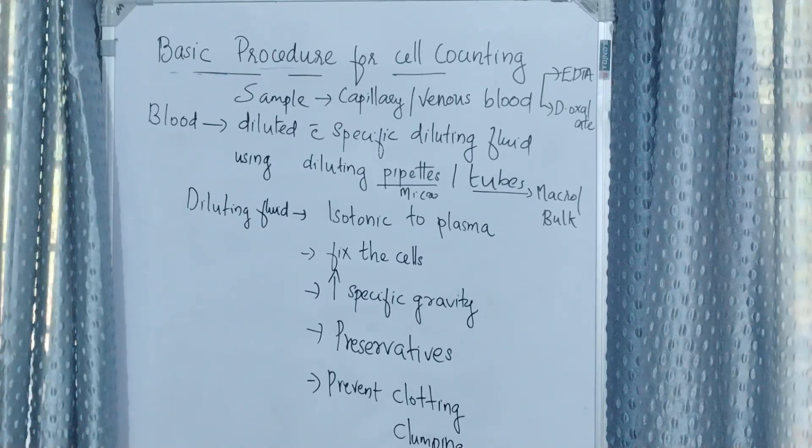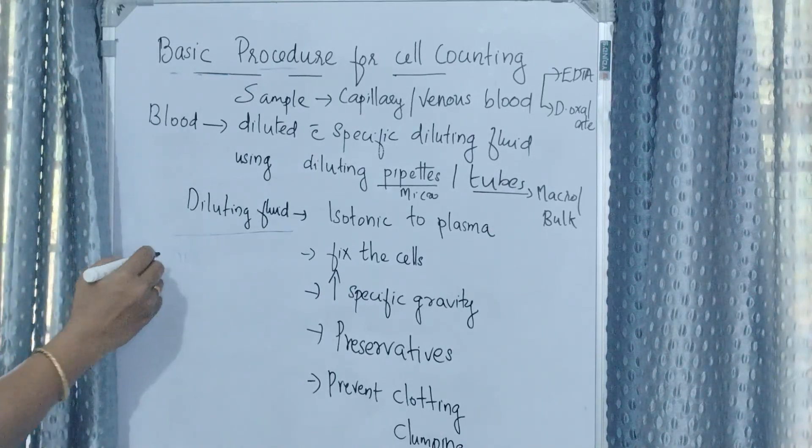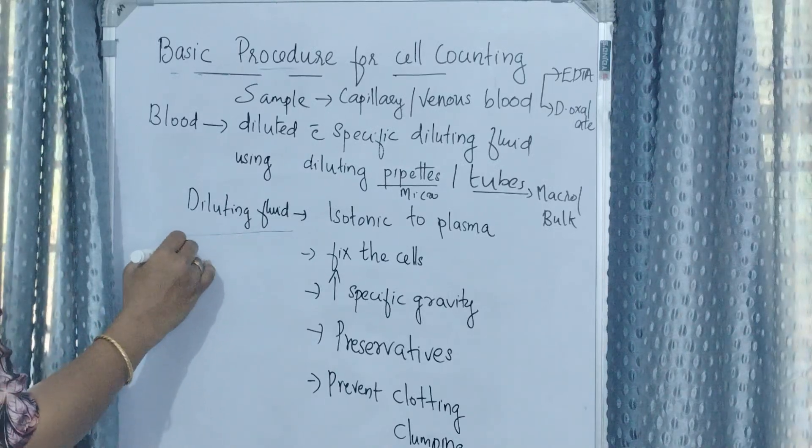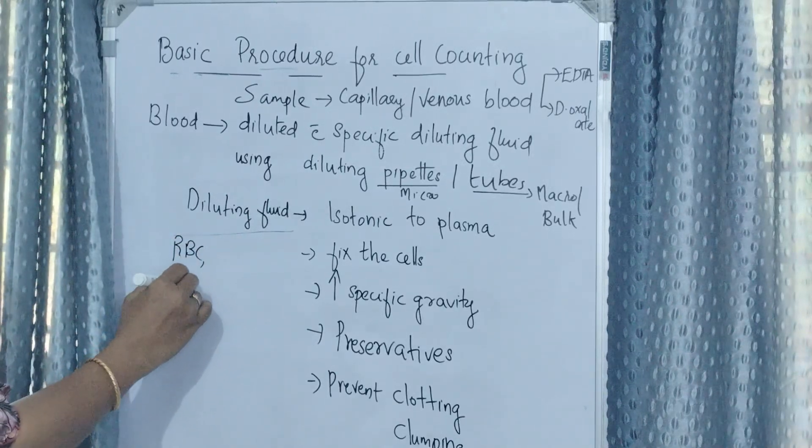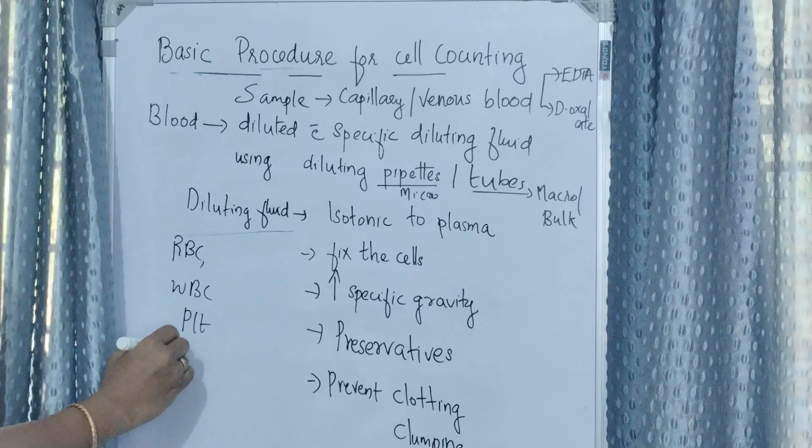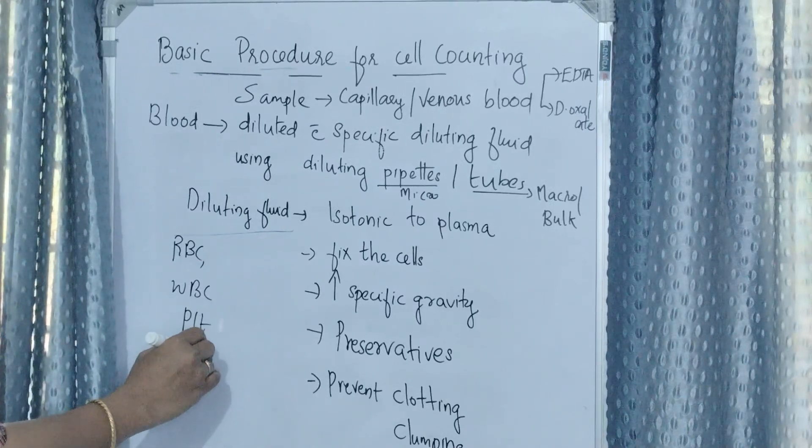There are specific diluting fluids for each cell counting: specific for RBC counting, WBC counting, platelet counting, and eosinophil counting.